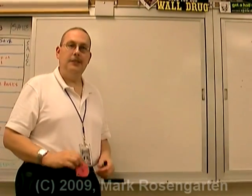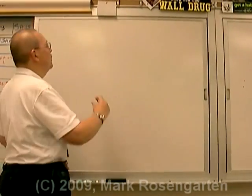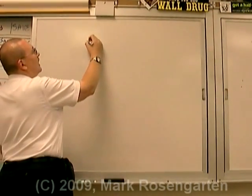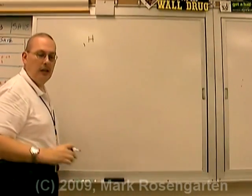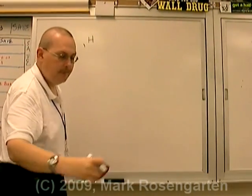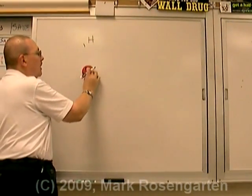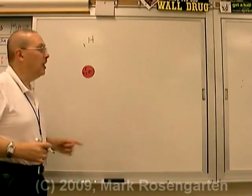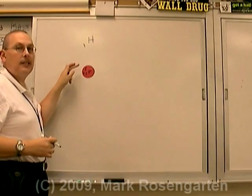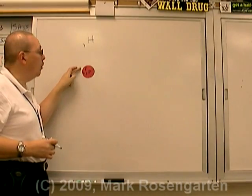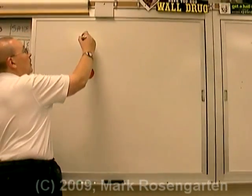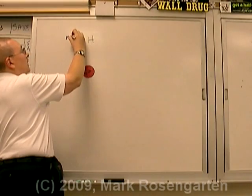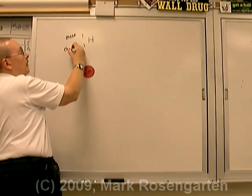An element is defined by the number of protons that an atom has in its nucleus. For example, the element hydrogen contains one proton in its nucleus. This particular form or isotope of hydrogen has a mass of one because it is made of only one proton. The mass goes on top and the charge goes on the bottom.